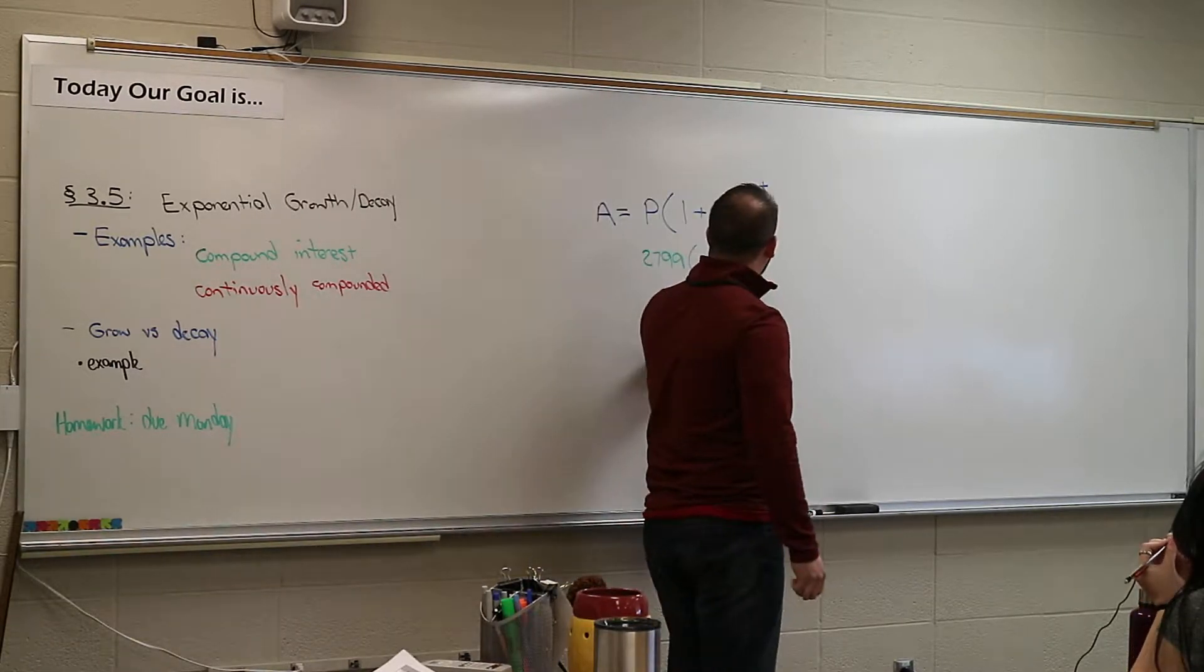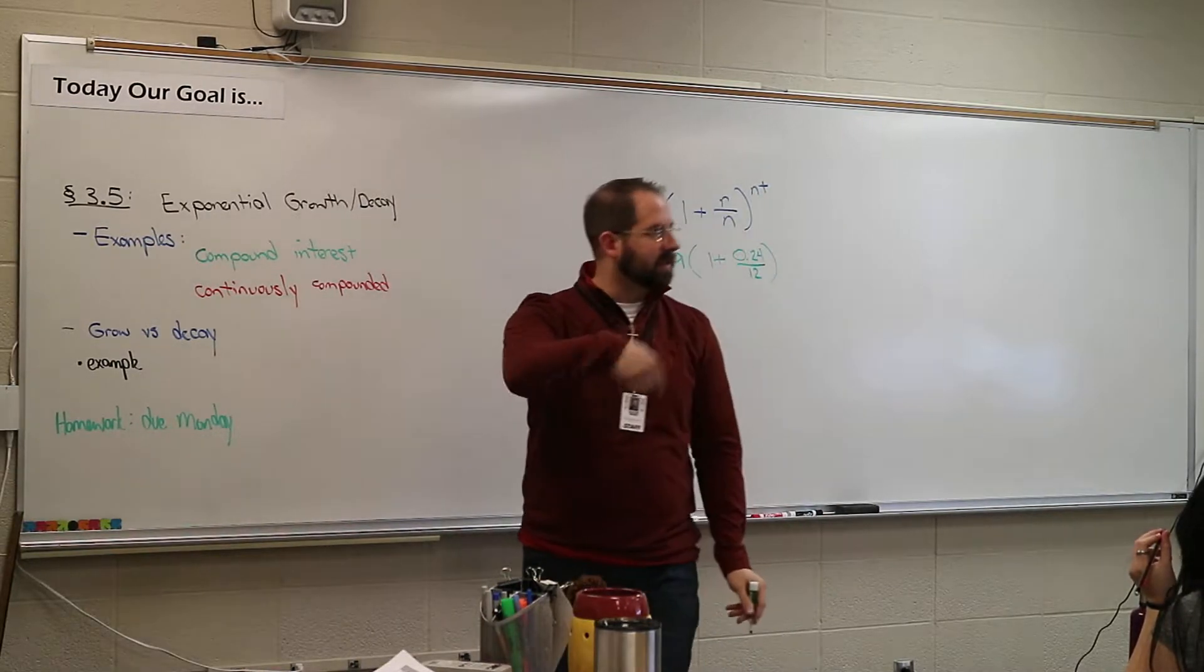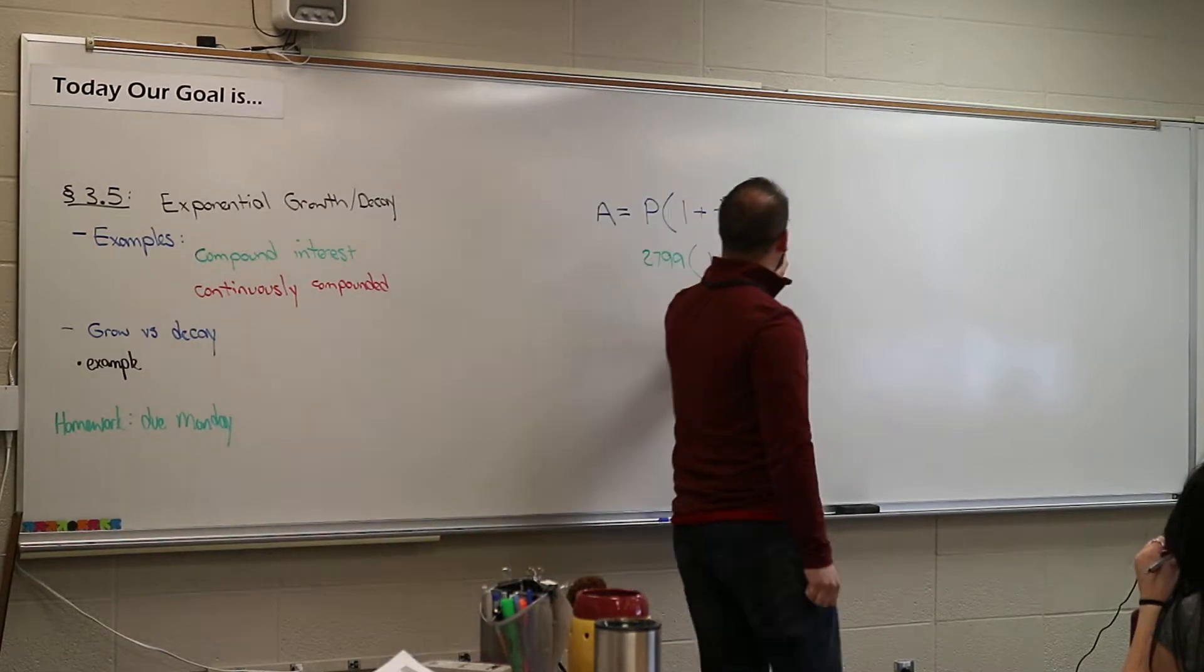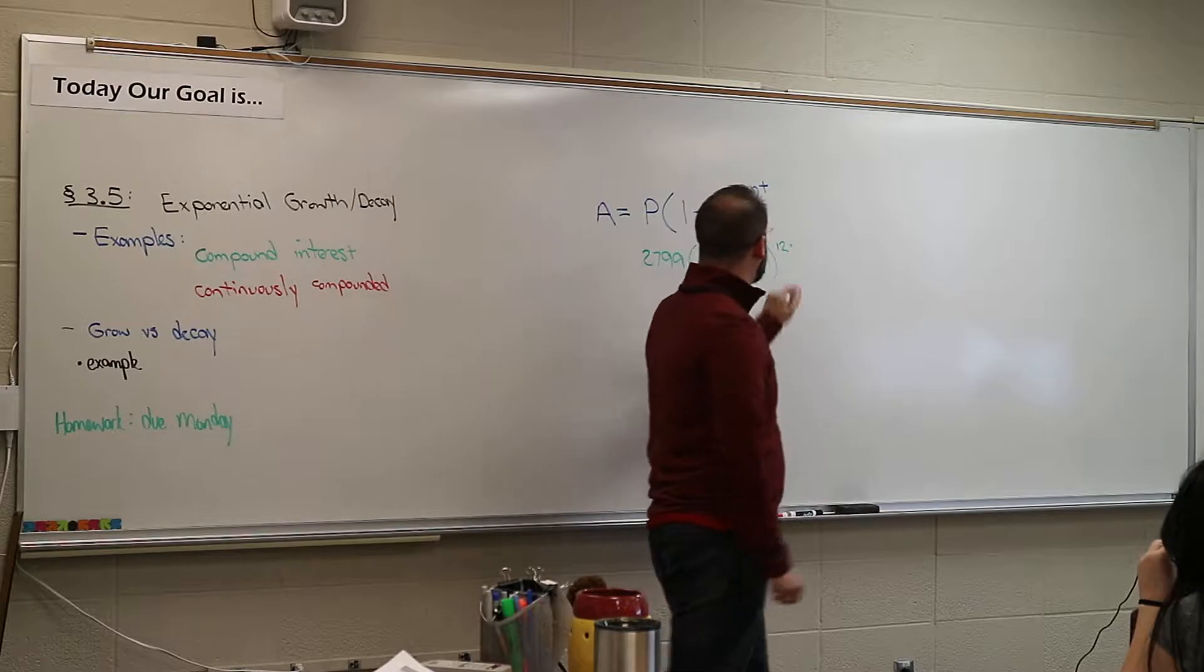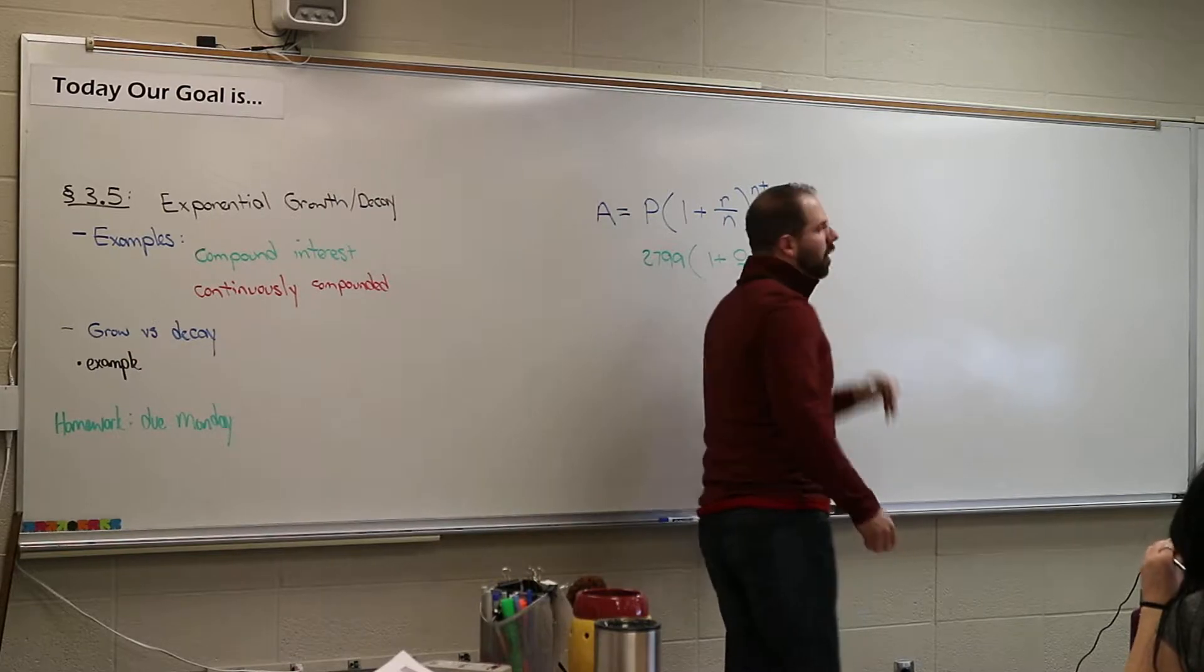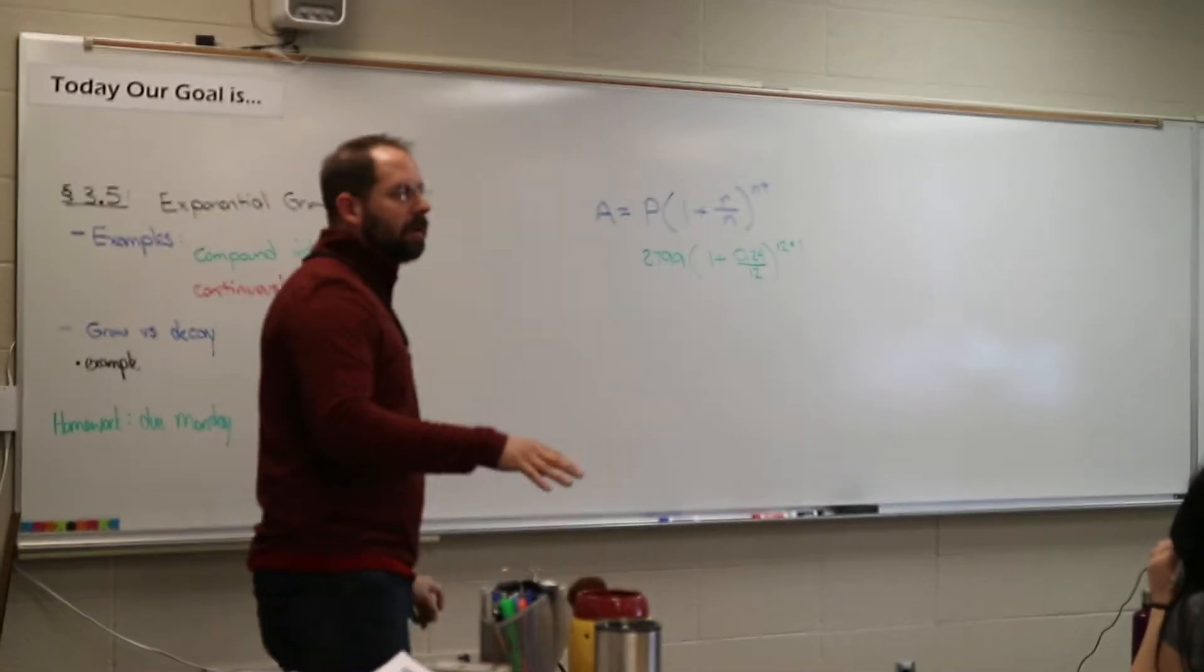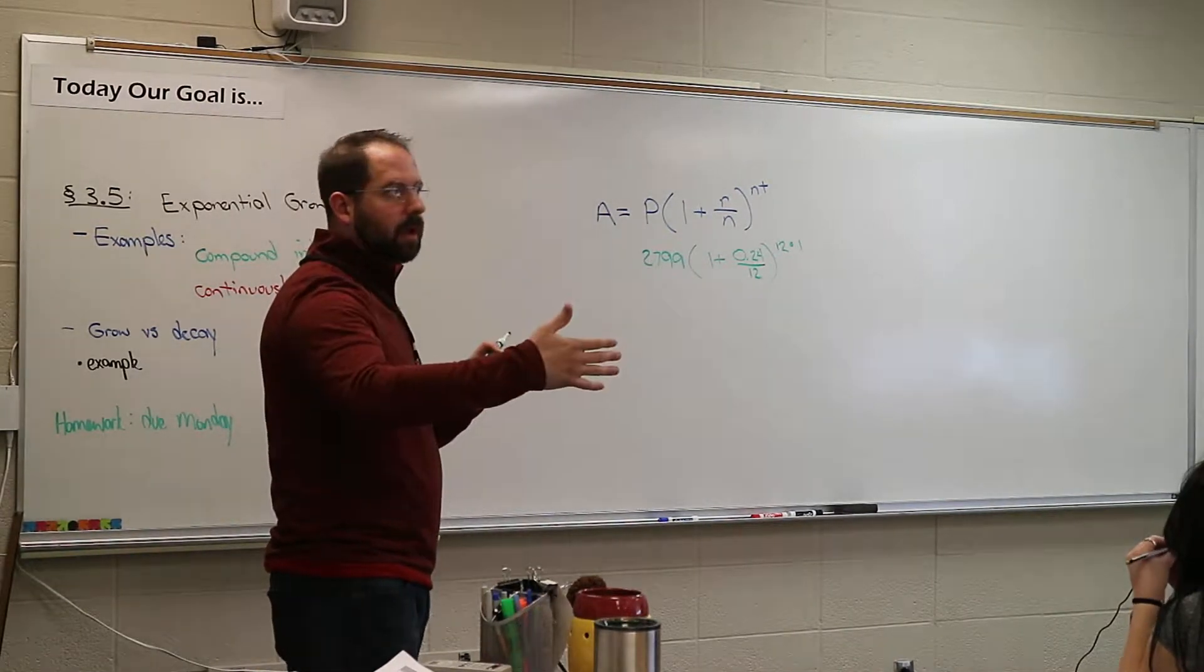They charge you interest per month, and n is how many times they charge you interest. That's the number of times of what they call compounding. That's how many times they charge. So, then you put 12 up here times how many years you're going to go. Let's say we go for one year, like, you went for one year, and you didn't pay your credit card, you just, like, you bought the MacBook, and you're like, I don't really have the money, I'm not going to pay it until maybe the end of the year, maybe December.